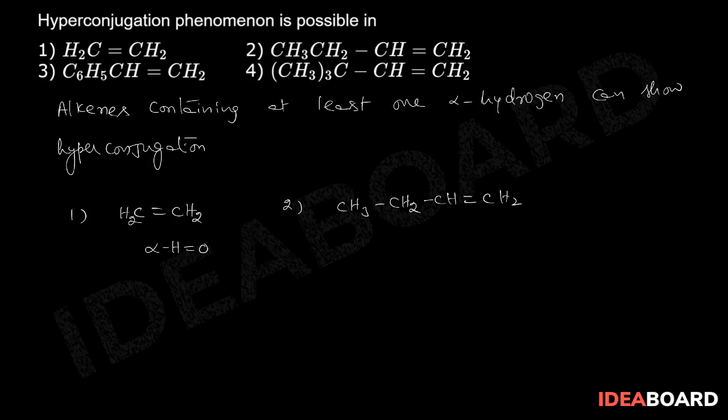In the second case, CH3CH2-CH double bond CH2. The double-bonded carbon atom is sp2 hybridized. The next carbon atom is called the alpha carbon, which contains two hydrogens. So the number of alpha hydrogens is equal to two, and hyperconjugation is possible.